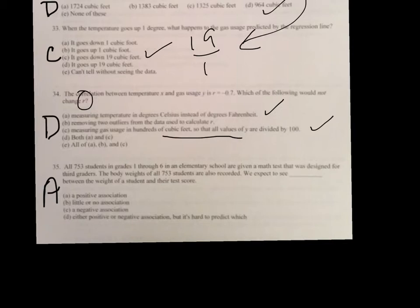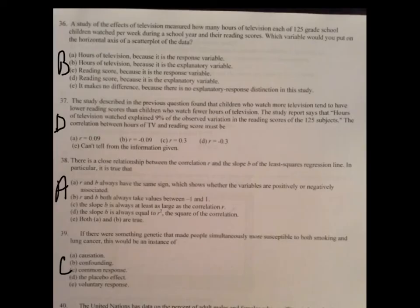On number 35, basically, we expect to see blank between the weight of a student and the test score. Remember, the heavier the student is, the higher the score should be. So, there should be a positive association on this one. Because we are dealing with grades one through six. That means, and it's a third grade test. So, the older you are, the heavier you're going to be, as well as the smarter you should be. So, you should score a higher score if you're older. On number 36, it's asking you which one would you put on the horizontal axis. That's going to be your X value. So, in this case, it's the hours of television because it explains the grade that the children score.